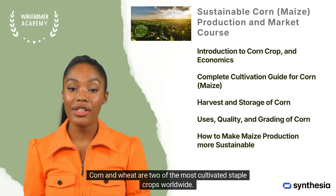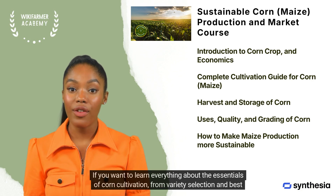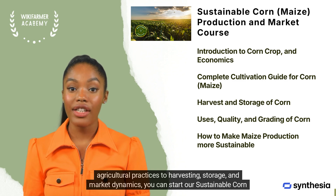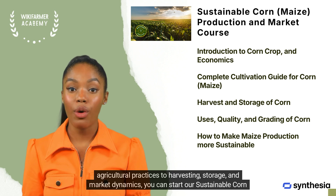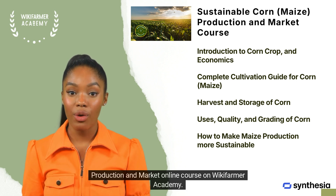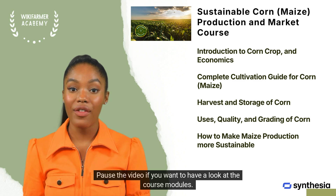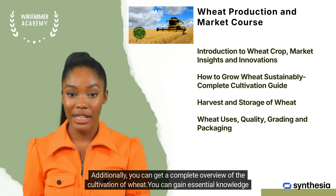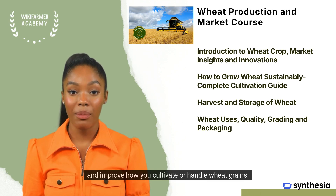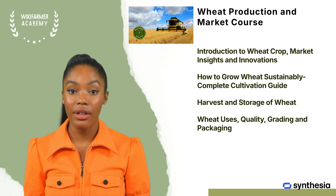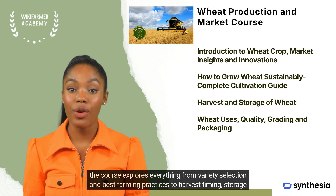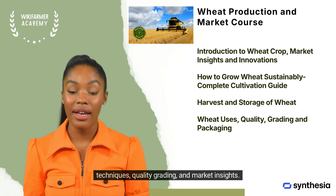Corn and wheat are two of the most cultivated staple crops worldwide. If you want to learn everything about the essentials of corn cultivation — from variety selection and best agricultural practices to harvesting, storage, and market dynamics — you can start our sustainable corn production and market online course on Wikifarmer Academy. Additionally, you can get a complete overview of wheat cultivation, gaining essential knowledge on variety selection, best farming practices, harvest timing, storage techniques, quality grading, and market insights.